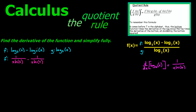Now we find the derivative of g. Log base 3 of x will convert to 1 over x·ln(3).